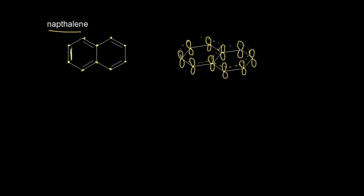If we look at naphthalene, we can count 2, 4, 6, 8, and 10 pi electrons. So naphthalene has 10 pi electrons. If you think about Huckel's rule, 4n plus 2 — if n is equal to 2, then 4 times 2 plus 2 equals 10 pi electrons. So 10 pi electrons is a Huckel number. It looks like naphthalene fulfills the two criteria, even though technically we can't apply Huckel's rule to polycyclic compounds. But those 10 pi electrons are fully delocalized throughout both rings.